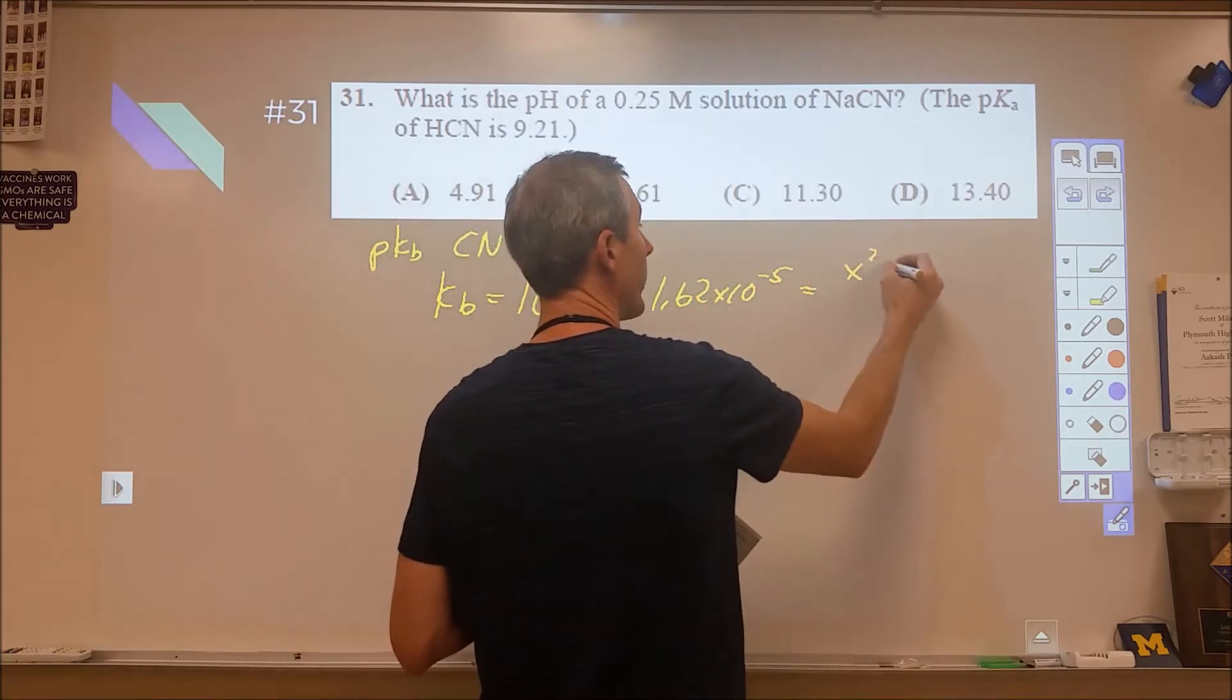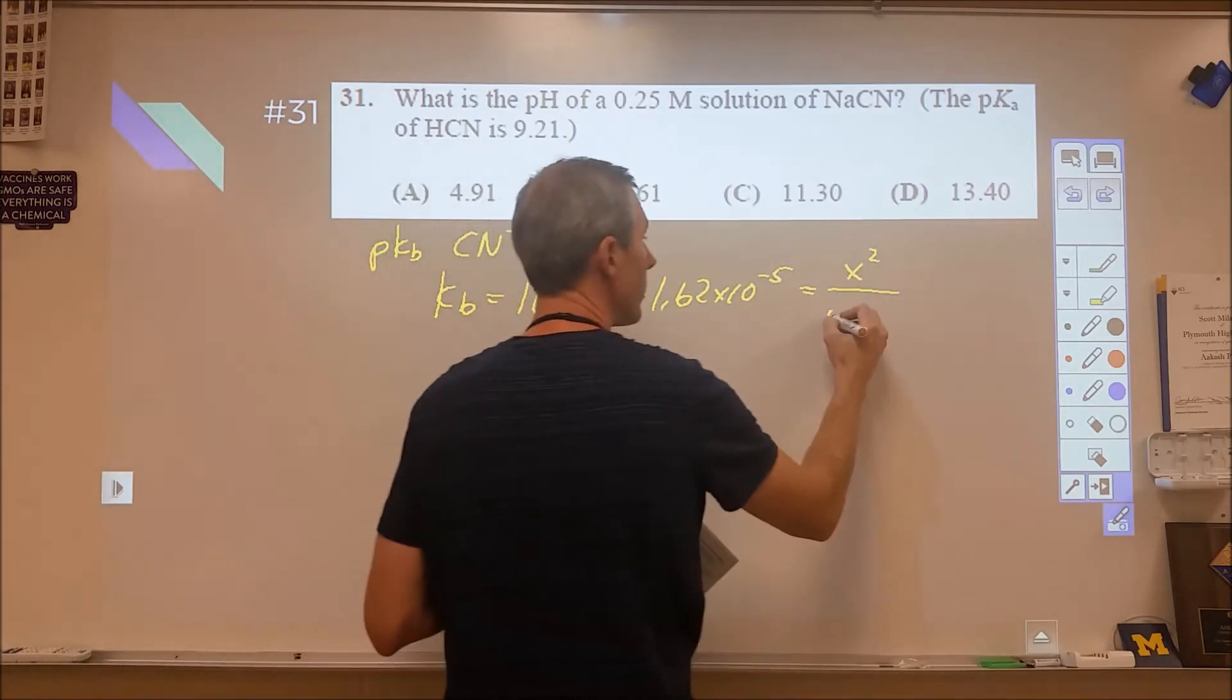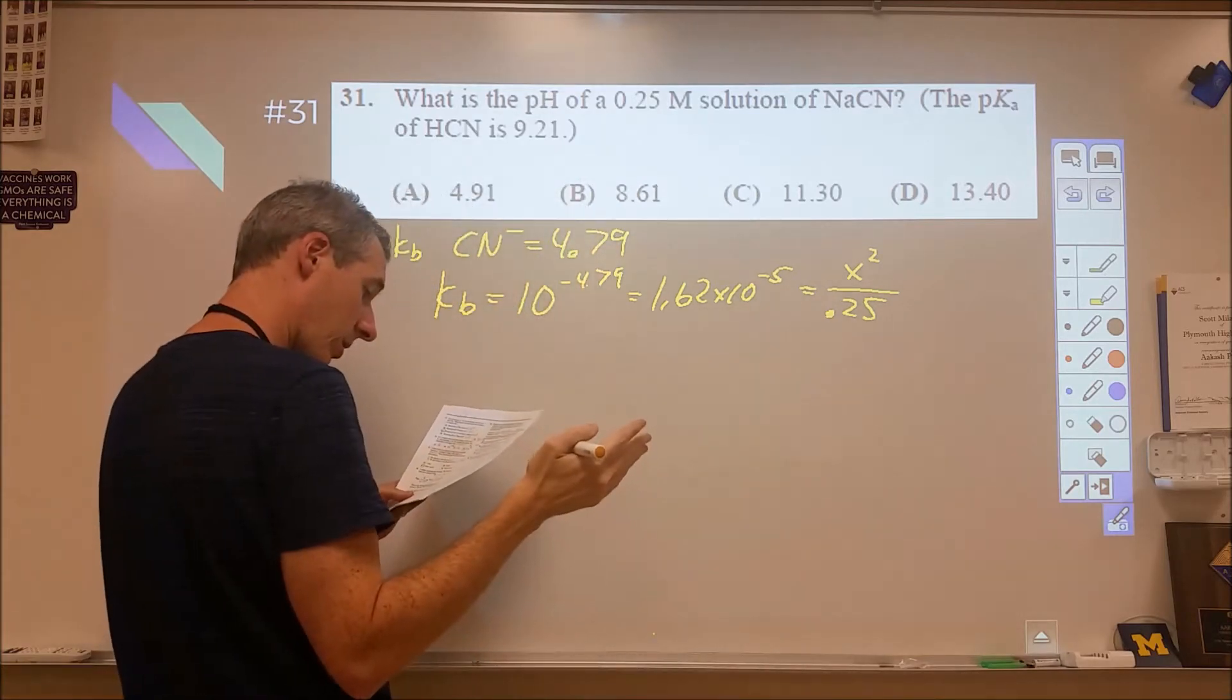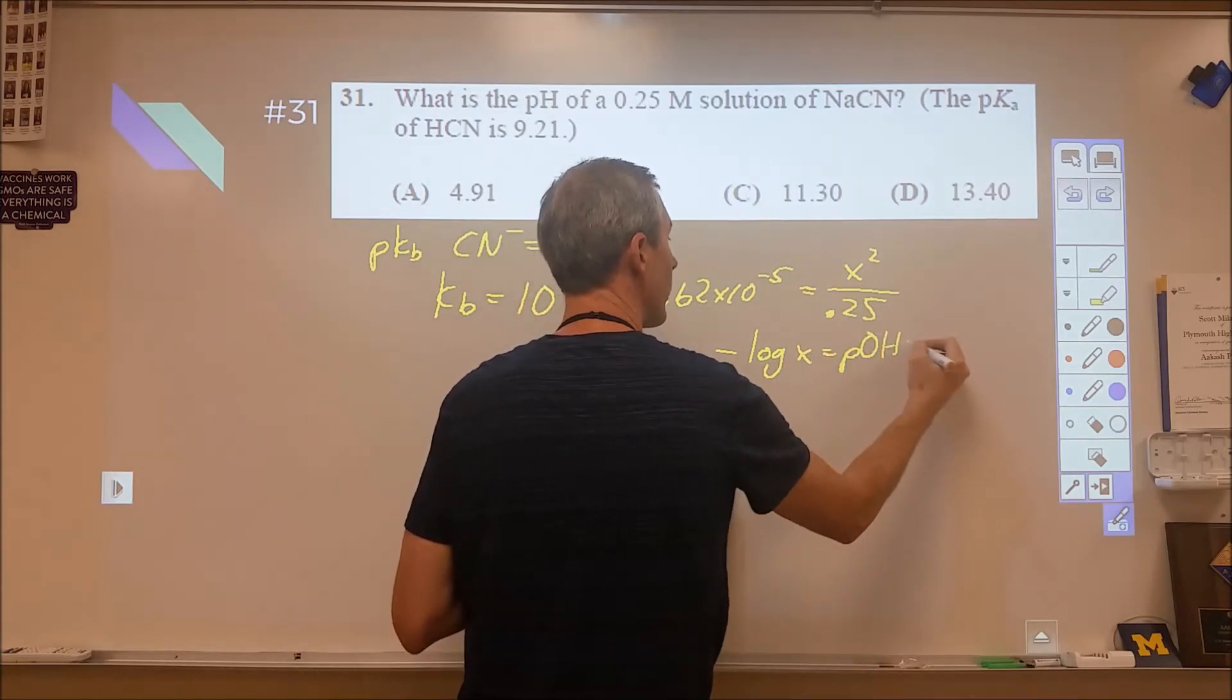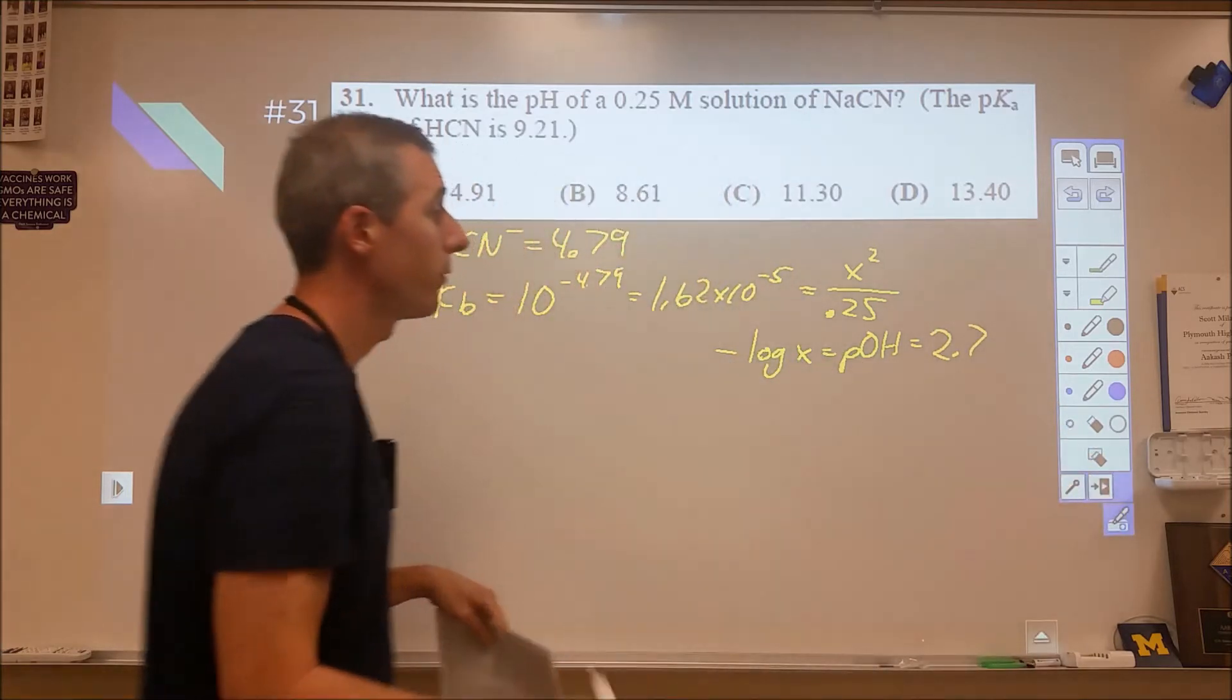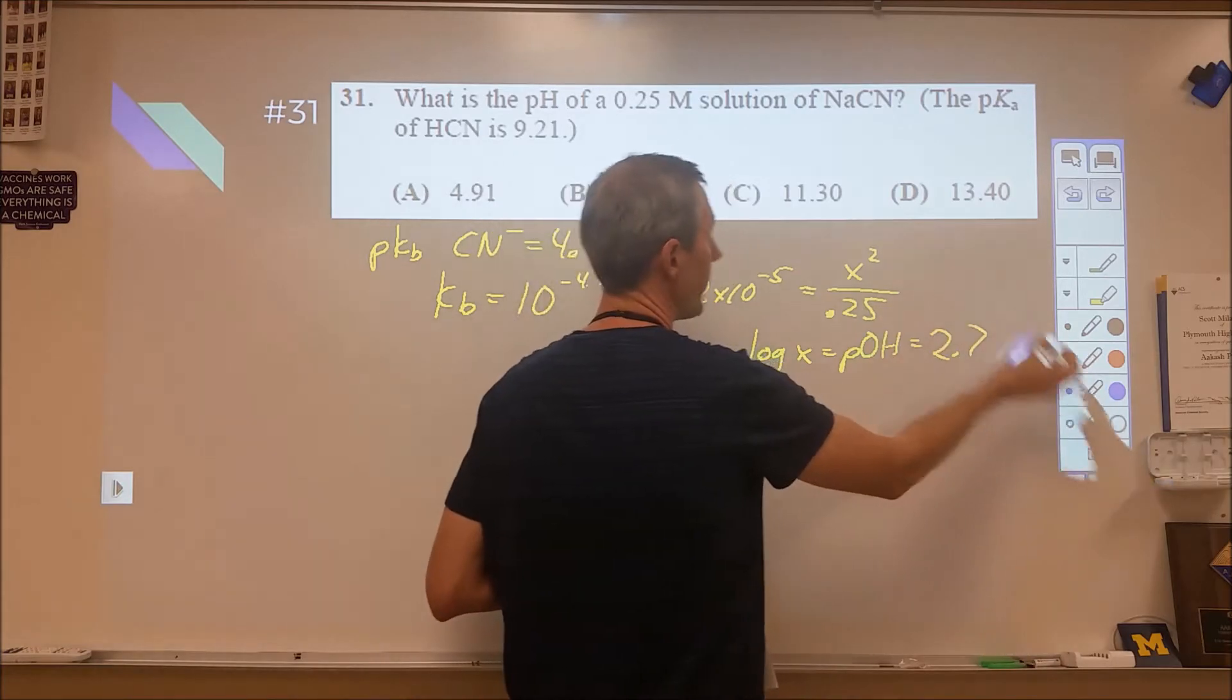I set that equal to x squared over the concentration, which is 0.25 molar. I solved for x, and then I took the negative log of that x, and that was my pOH. I got that to come out to be 2.7, which means that my pH would be 14 minus that, which is 11.3, and therefore C is my answer.